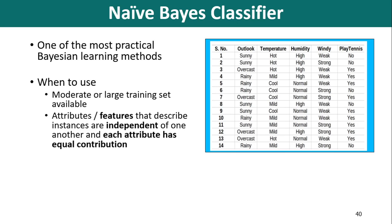We are referring to the example we have seen earlier when we discussed decision trees. In this example we are having four attributes: outlook, temperature, humidity, and windy, and the target variable or dependent variable is play tennis. This is the problem that provides us the weather parameters, and based on these we are supposed to predict whether to play tennis or not.